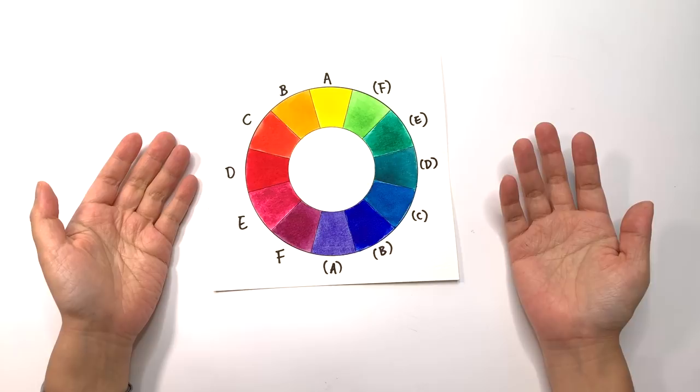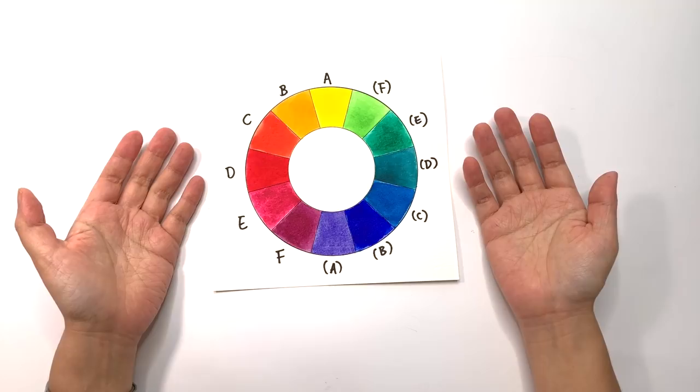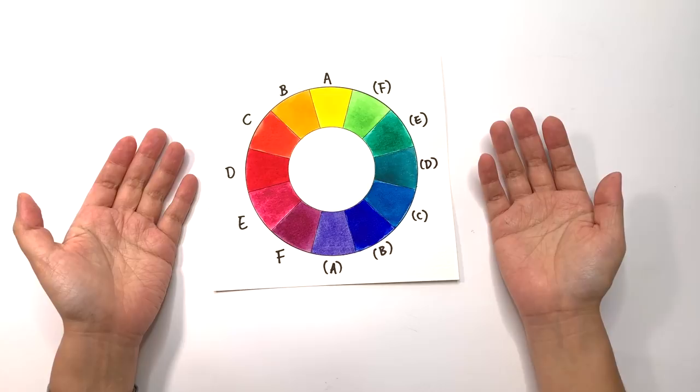we're going to start talking about customizing the Color Wheel palette to something that is going to be more suitable for using in real life, in real painting, and customizing it to suit your need. Customization is going to be in two parts.